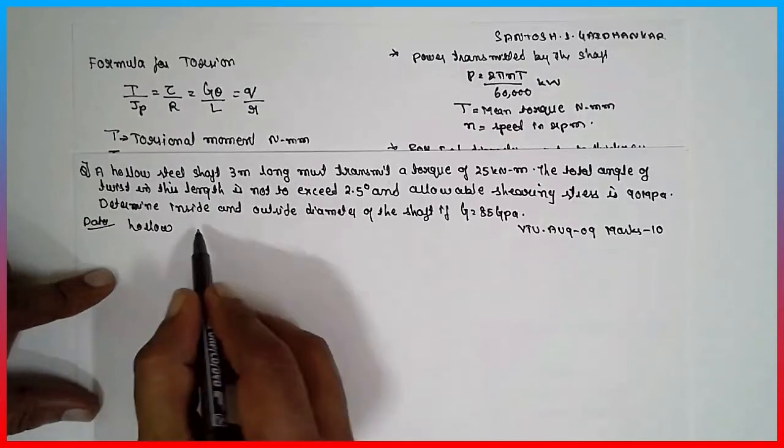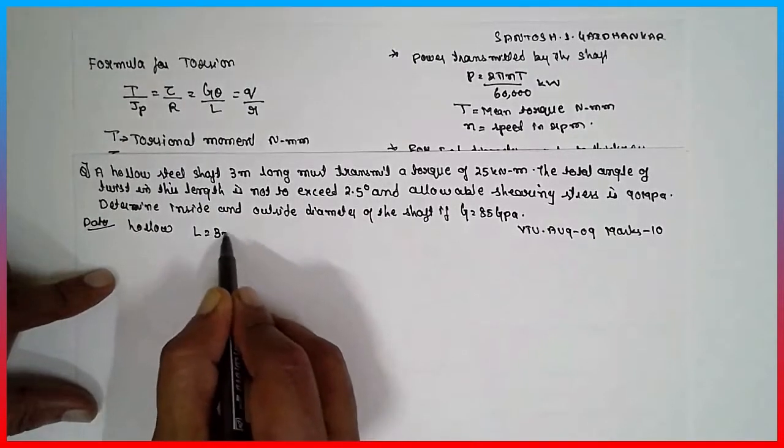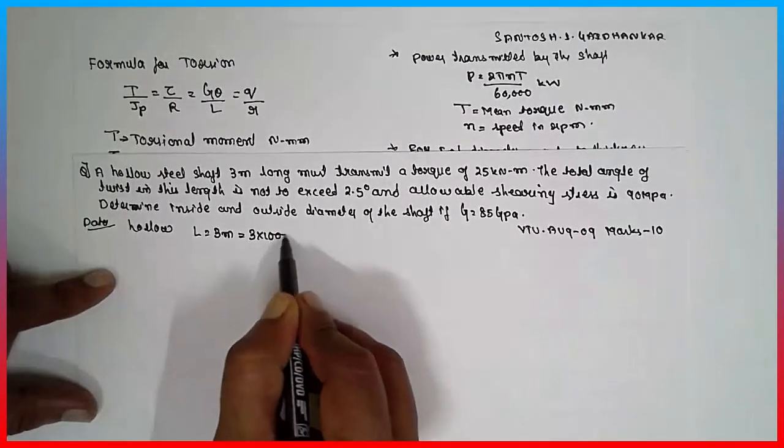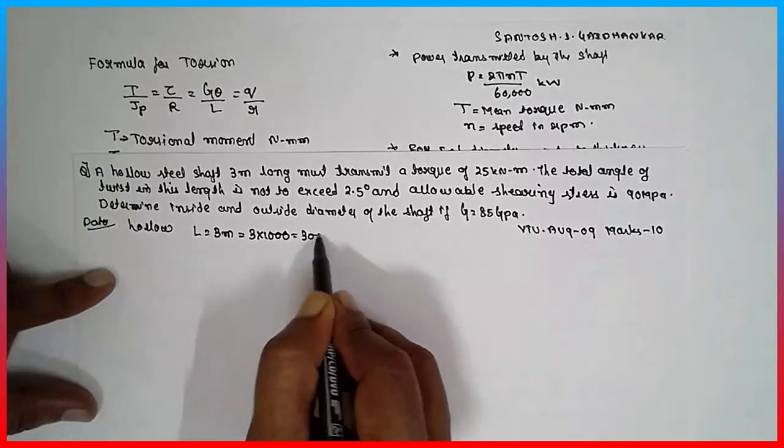A shaft 3 m long, length is given 3 meter, not mm, 3 meter. 3 into 1000, it will be 3000 mm.